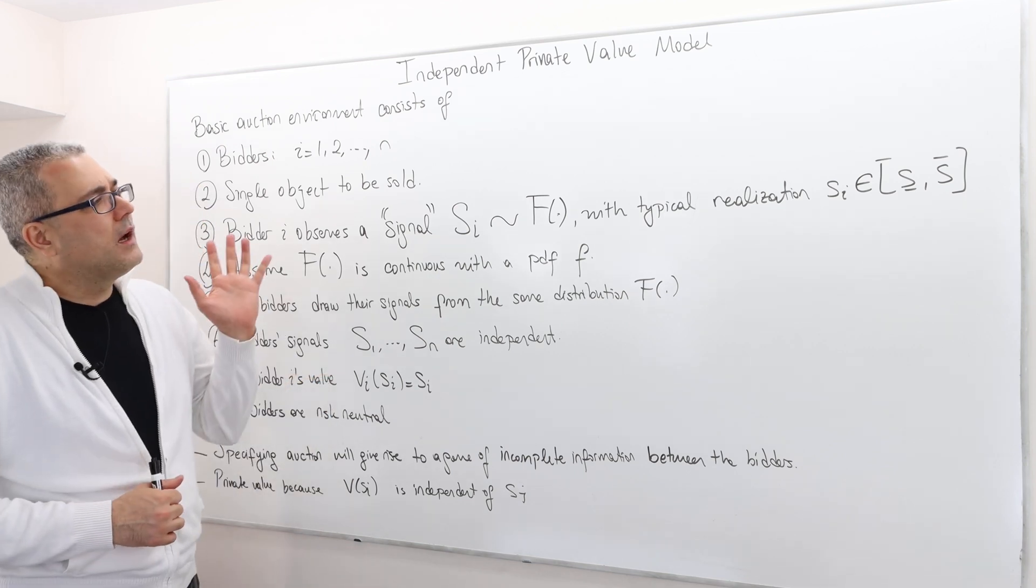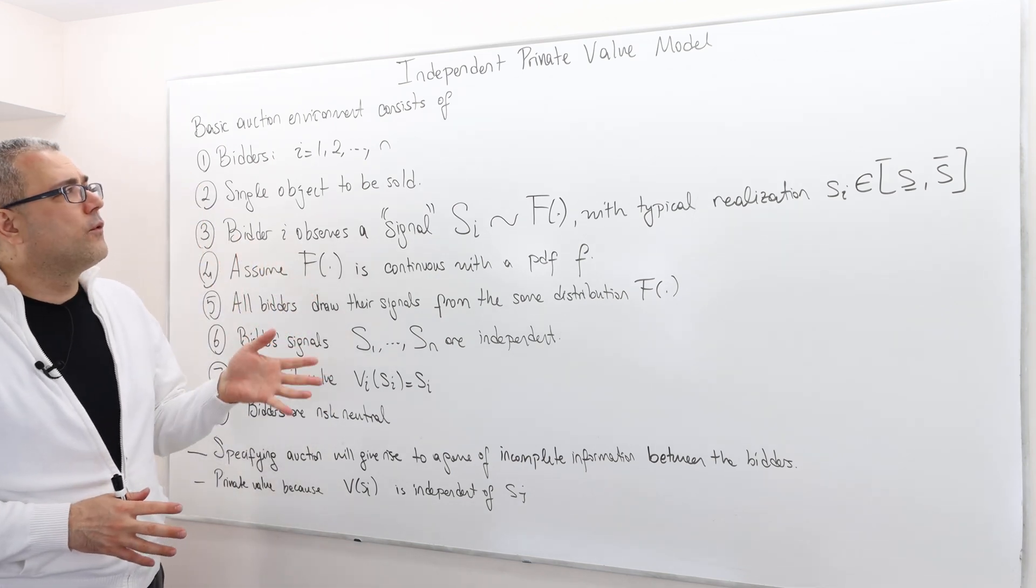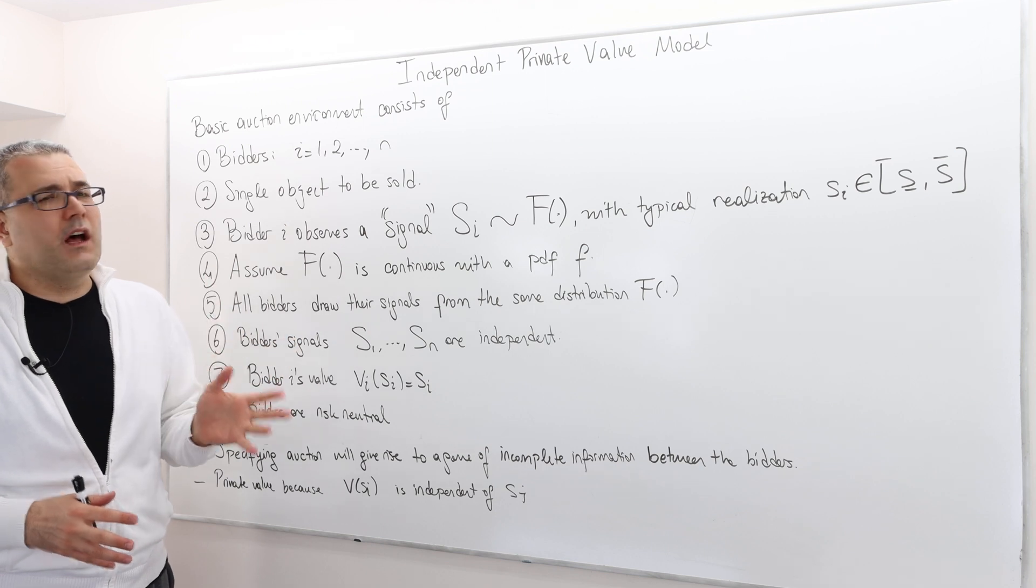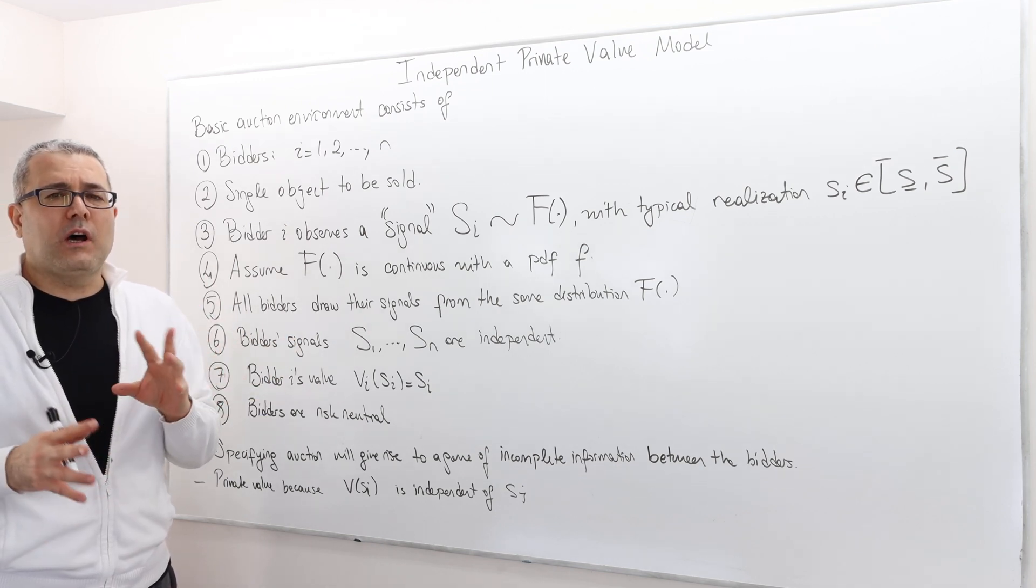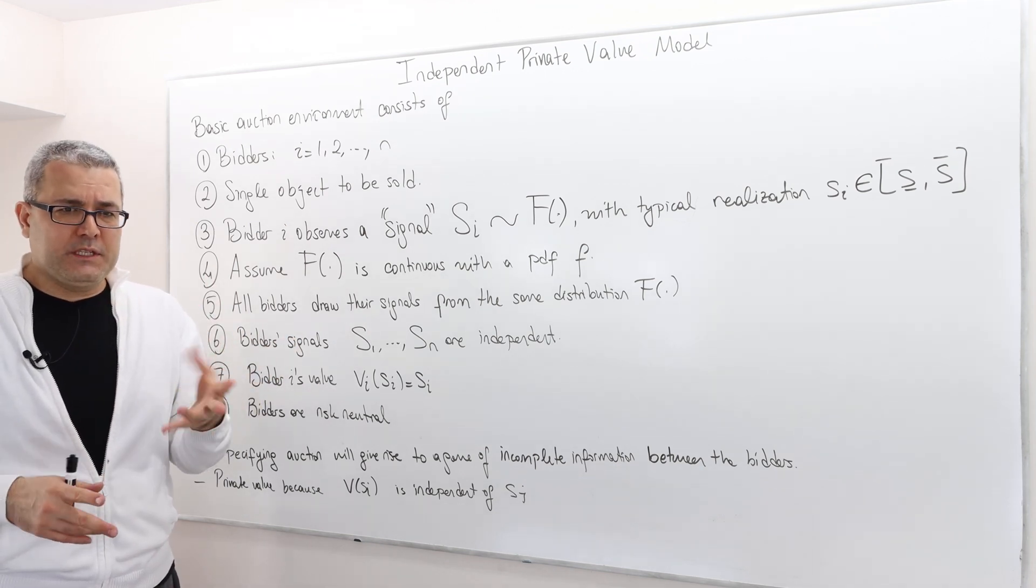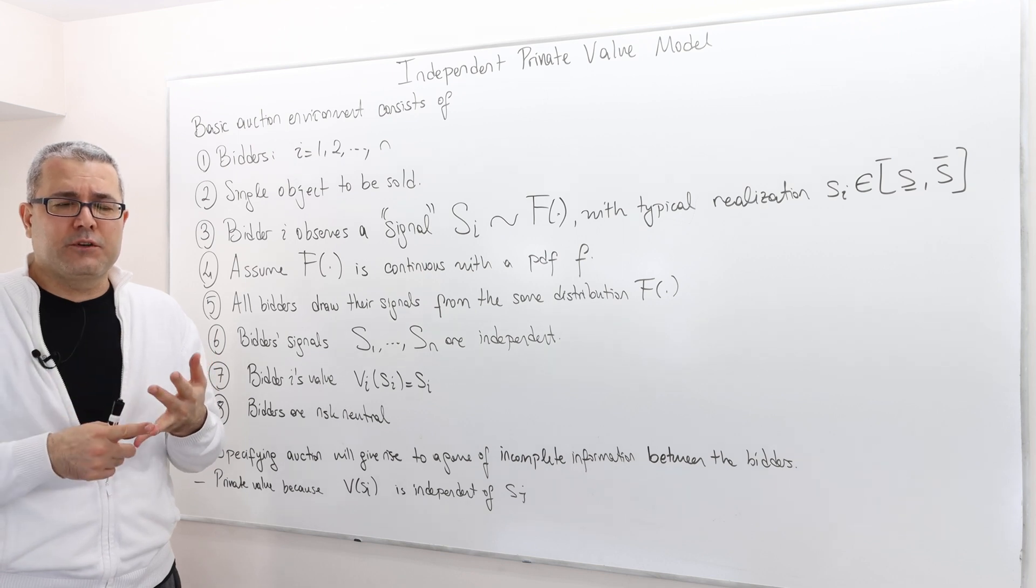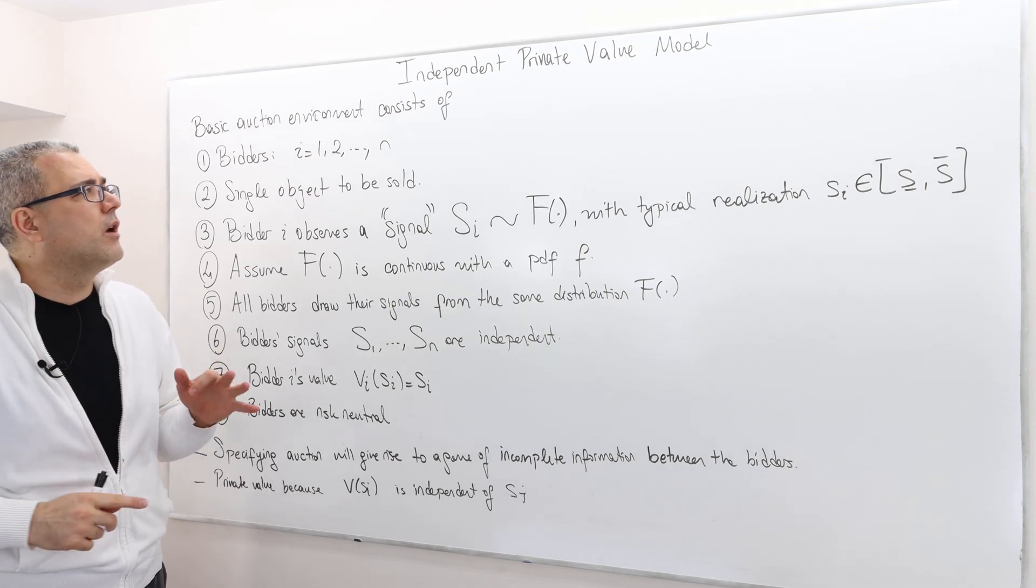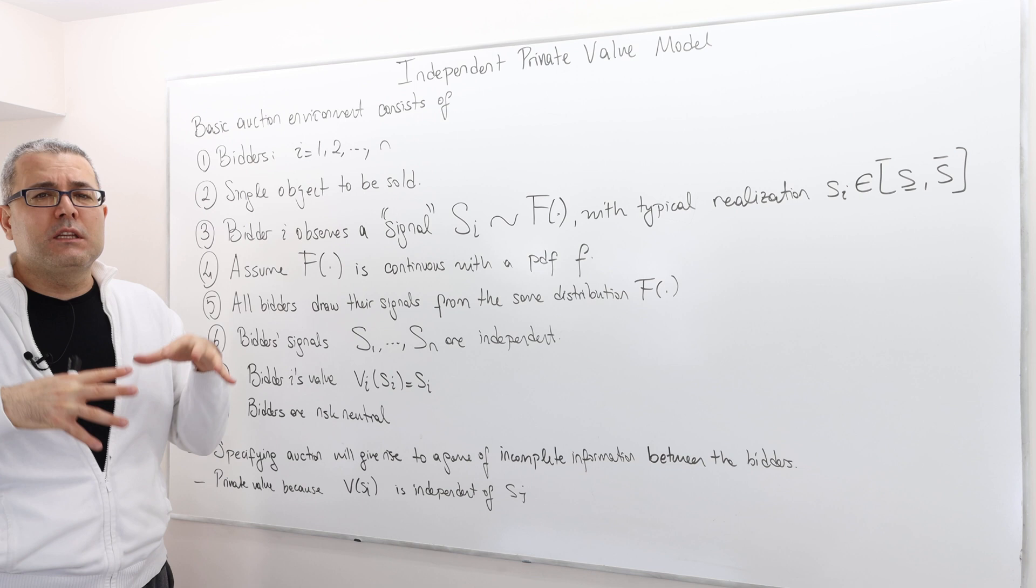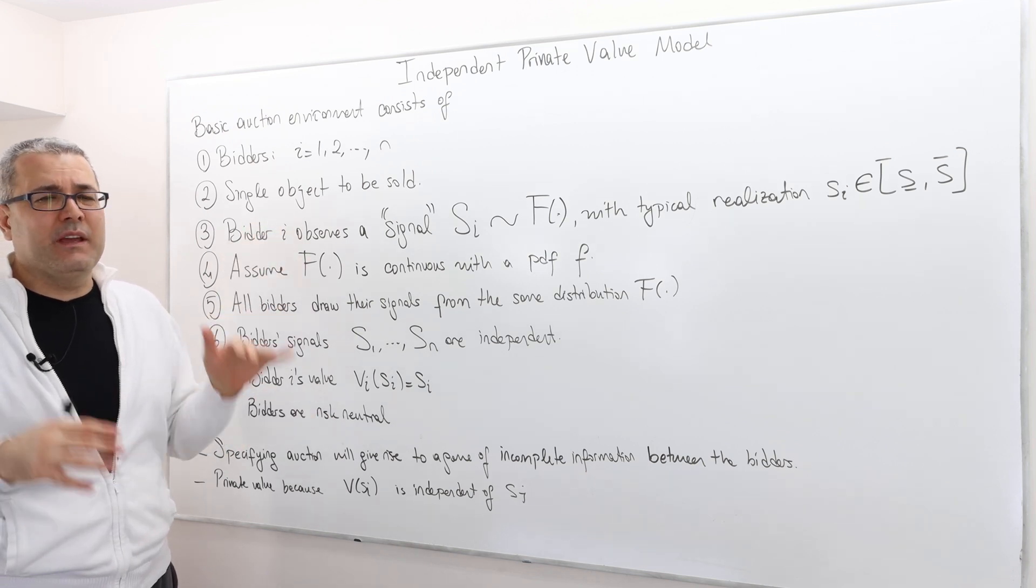Okay, so this is the formal model for the independent private value model, and all our examples in the next episodes—the second price auction, the first price auction, and so on—are going to be built upon this same model.